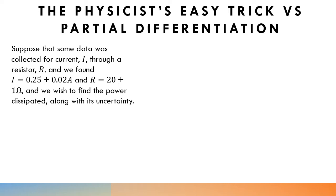So suppose that you've collected some data in an experiment. You've collected the current passing through a resistor and the results you've got lead you to find that the current is 0.25 amps plus or minus 0.02 amps and that the resistor is 20 plus or minus 1 ohms.